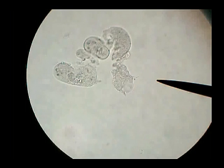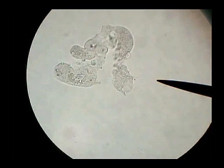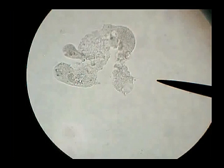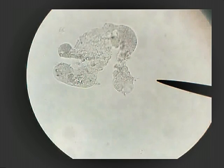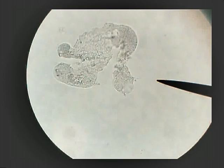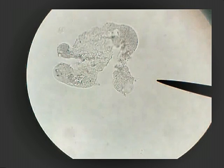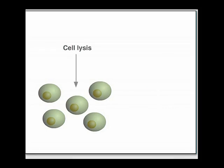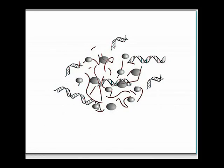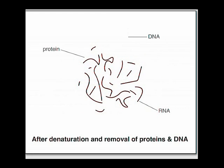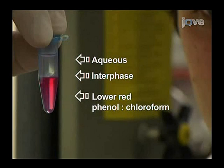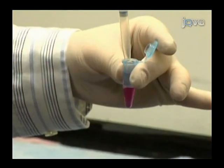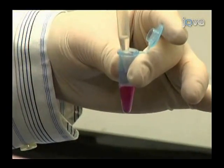Tri-reagent is a phenol-based reagent containing a unique combination of denaturants and RNase inhibitors, used in a convenient single-step disruption and separation. It helps in cell disruption by releasing all molecules into the solution, and phenol chloroform separates the RNA from other debris, thereby forming three layers. The uppermost aqueous layer contains the RNA, which is collected into a new Eppendorf tube.